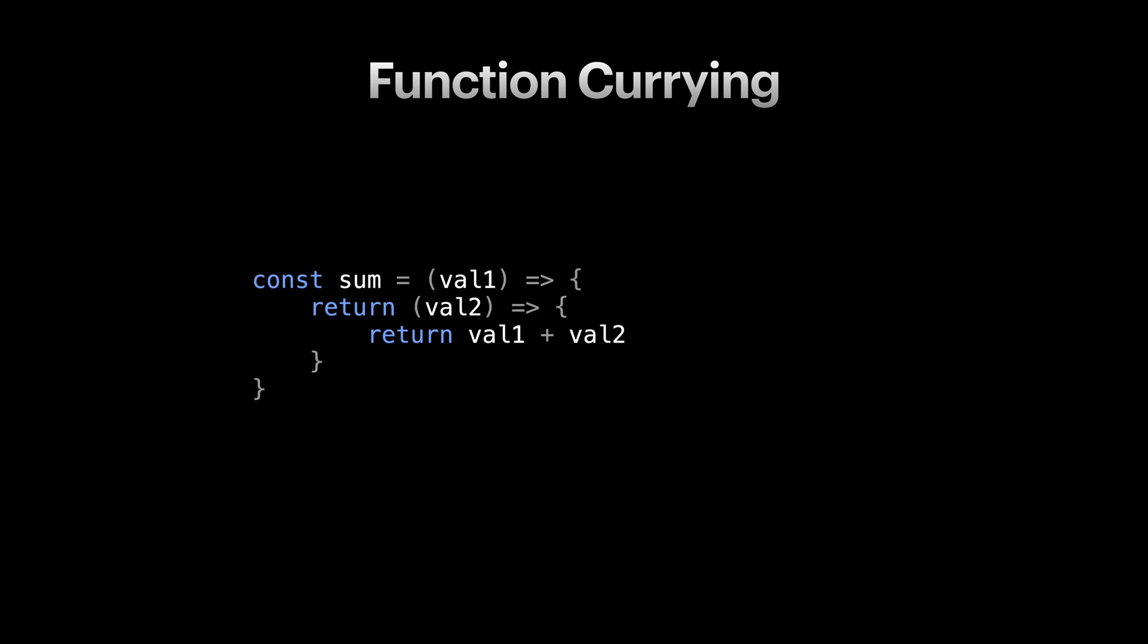Here I rewrote our sum function. The outer function in sum only receives the first parameter, remembers it and returns another function that receives the second parameter, and finally in the innermost part when it has all the inputs it does the calculation. If our function needs more parameters we keep receiving a parameter at a time and return another function. What we just did here is called currying.